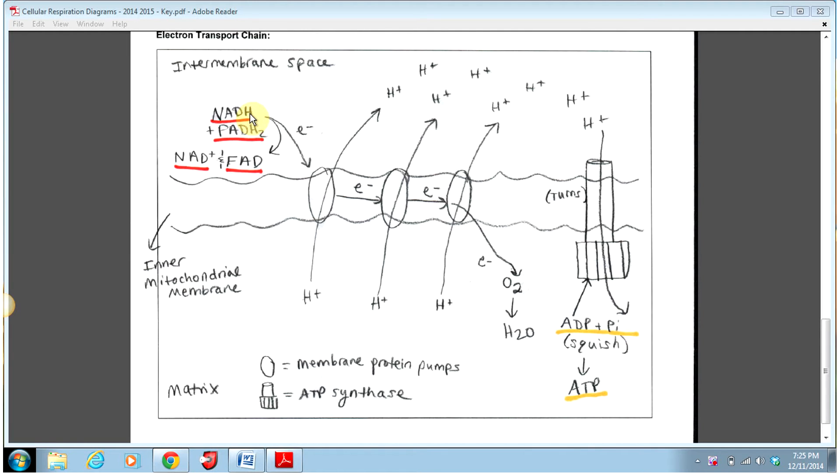The way that we do this is by taking our electron carriers NADH and FADH2 that we made during glycolysis, the intermediate step, and the Krebs cycle and losing electrons to convert these guys back into NAD plus and FAD. The electrons then get passed between protein pumps.